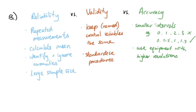Another method to improve accuracy is to use equipment with higher resolution. For example, if you're measuring the length of something, rather than using a ruler where the smallest interval is one millimeter, find a more accurate ruler with intervals as small as 0.5 millimeters. Equipment with higher resolution allows you to measure in-between values that you couldn't capture with lower-resolution equipment, bringing your measurements closer to the true value.